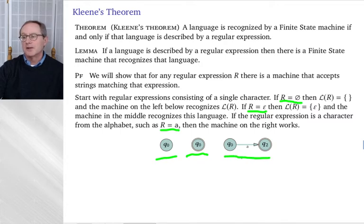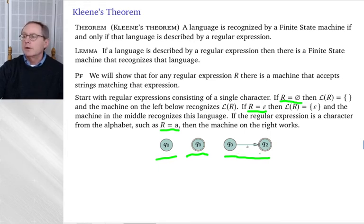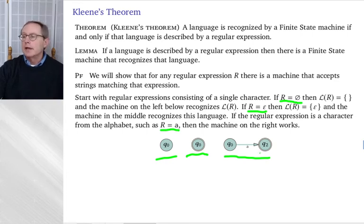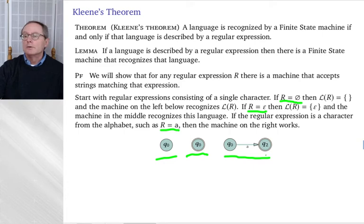For a single character like A: if you give the machine just an A, it goes into a final state. If you give it anything other than an A — including the empty string — it doesn't accept. If you give it an A followed by something else, it also doesn't accept because there are no arrows leaving Q2. So we have a machine for each of the smallest regular expressions.